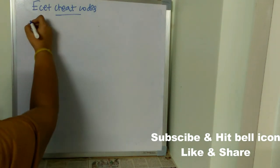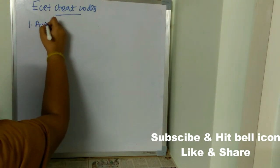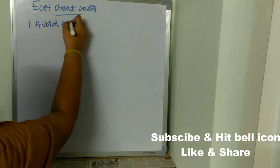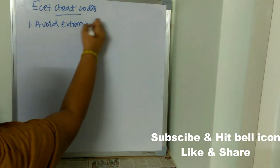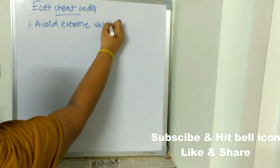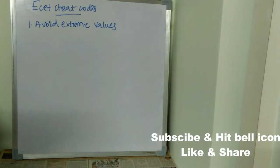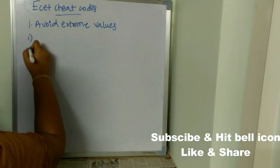The first important cheat code is avoid extreme values. What is meant by avoid extreme values? For example, there is a question and there are four options.